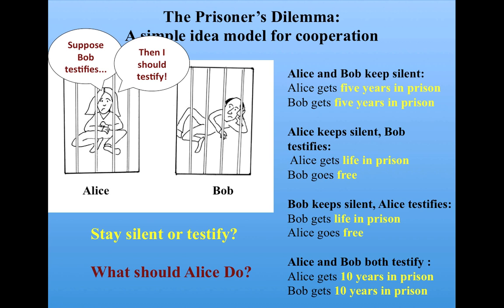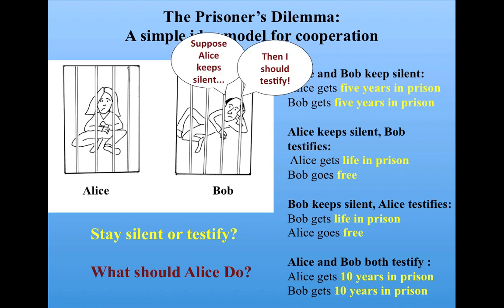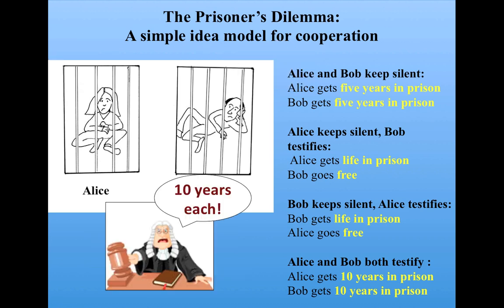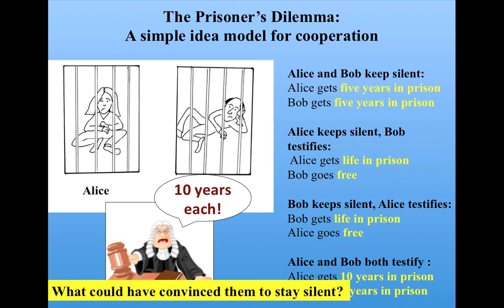The only problem is that Bob is going through the same thought process and concludes that in each case he should testify. So what happens is they both decide to testify and they both get ten years in prison, whereas they would have only gotten five years if they had cooperated with each other and kept silent. The question is, what could have convinced them to stay silent?